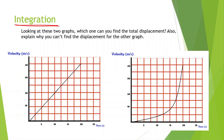Looking at these two graphs, which one can you find the total displacement in? Also explain why you can't find the displacement for the other graph. For this one, we can find the total displacement by just doing the area under the curve — one half base times height. It's a velocity over time graph and we know that the area under the curve gives us the displacement. So we can find it for that one.